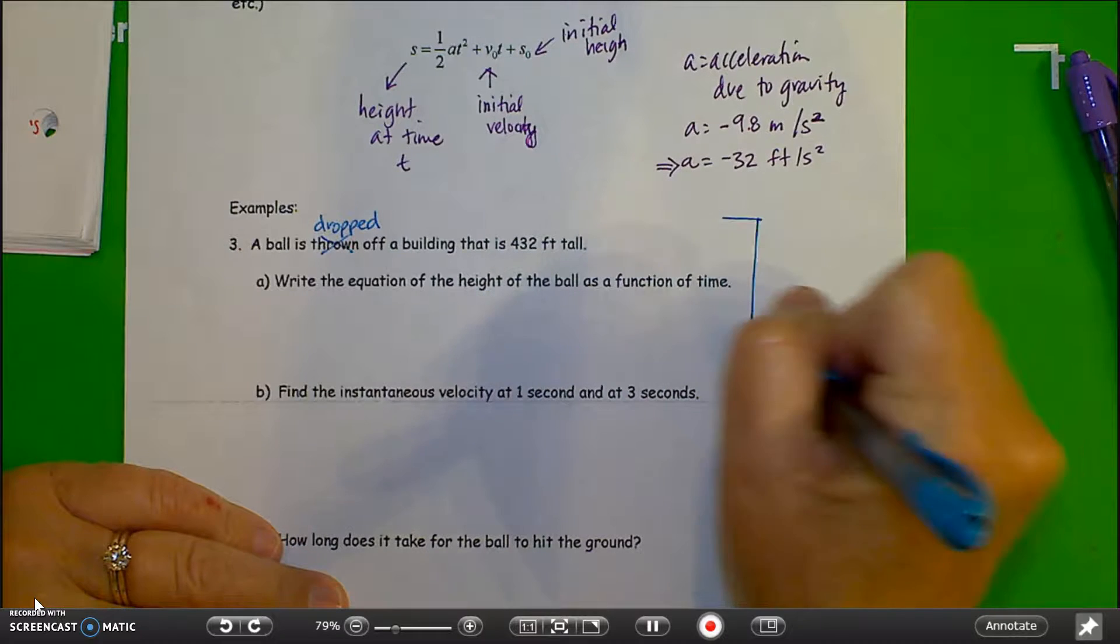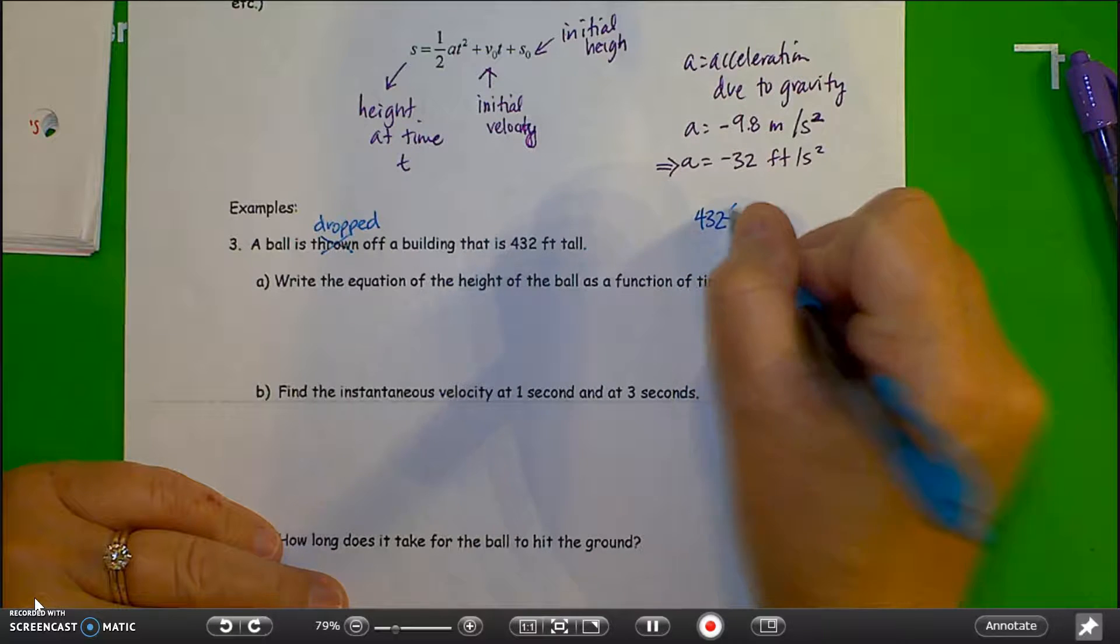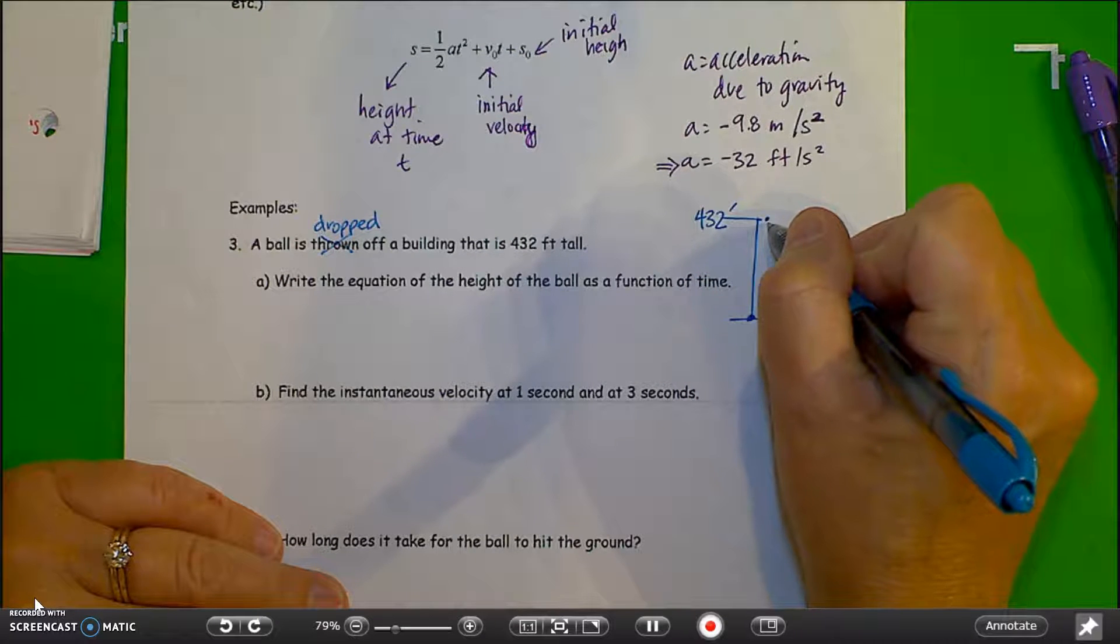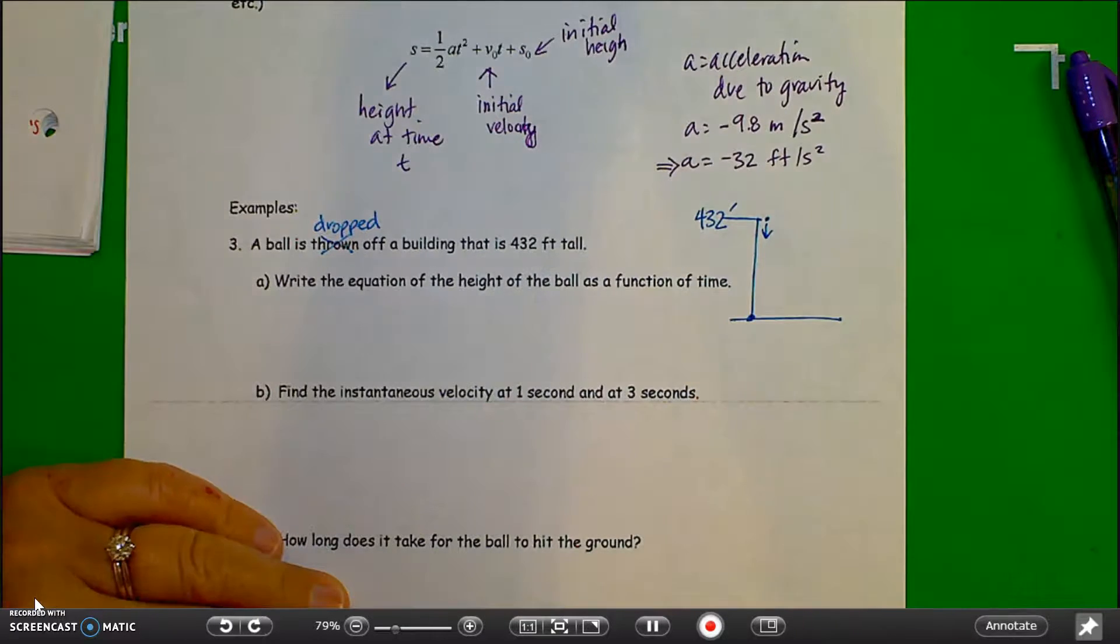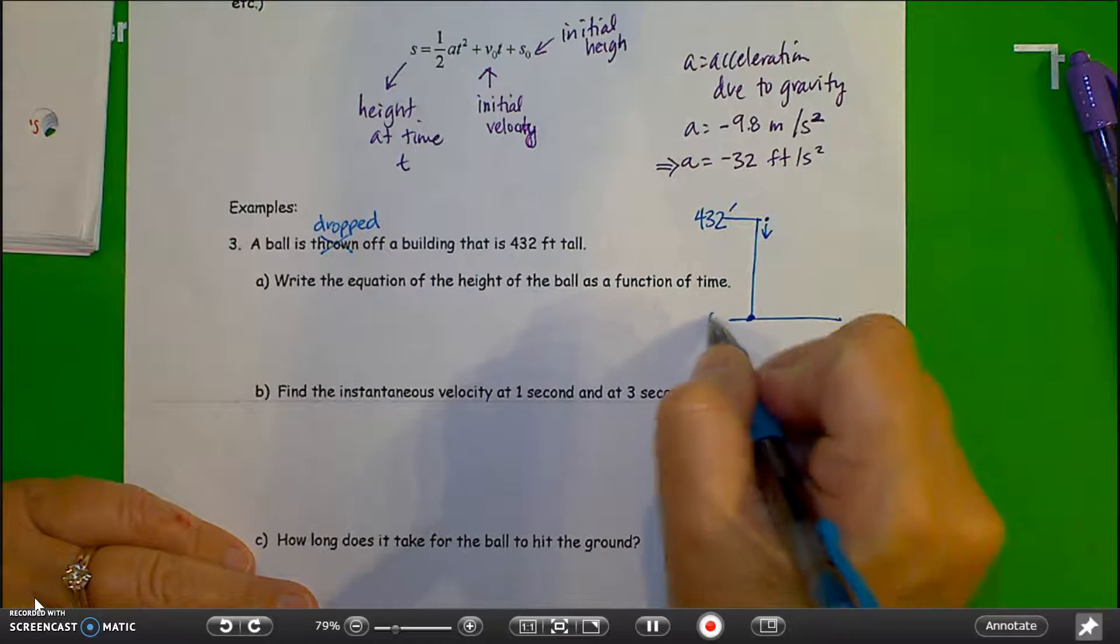So if we just sketch that out, say the top of the building here is 432 feet. We're basically going to take that ball and just drop it from that. Down here at the ground, we have zero feet.